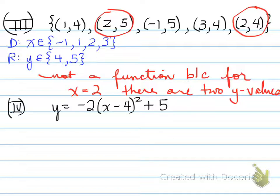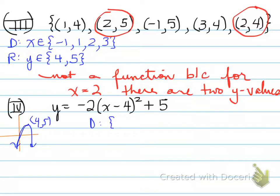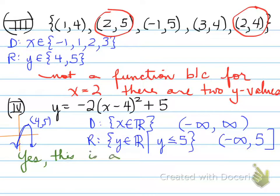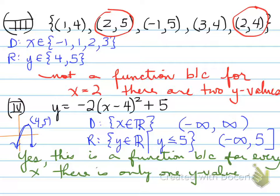The last one: y equals negative 2 times x minus 4 squared plus 5. This is a parabola that opens down with vertex at coordinates (4, 5). The domain of every parabola is x belongs to the reals. The range is y belongs to the reals such that y is less than or equal to 5. This is a function because for every x there is only one y value.